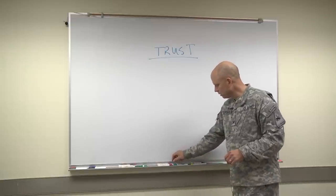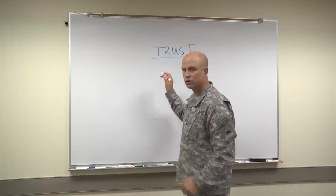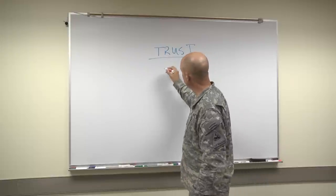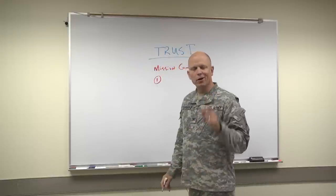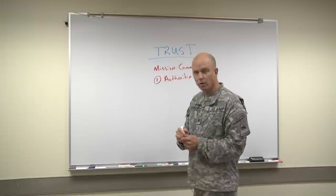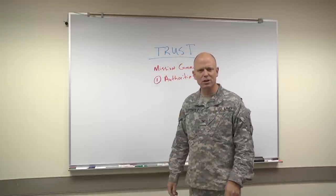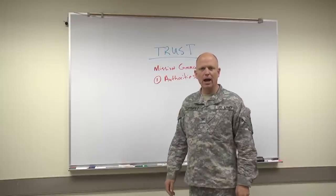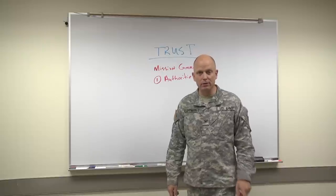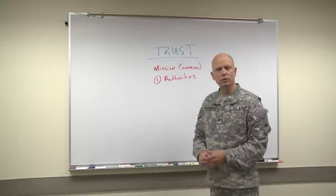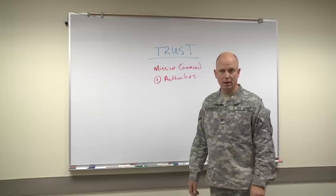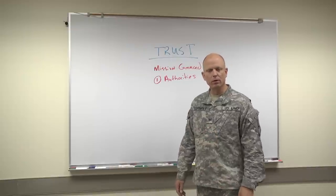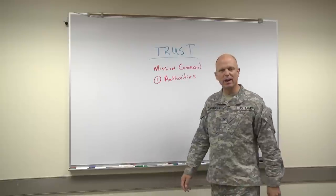Once we've established trust, there are three elements of Mission Command. The first are authorities. What are your authorities? What do you have the ability to make a decision on? What do you need to come and seek guidance on? I owe you your left and right limits. As a commander in this organization, you need to know what you can act on sui sponte, what you can move forward, and what you can lead the organization through, in order to truly have Mission Command founded on trust.